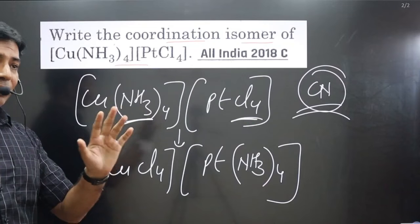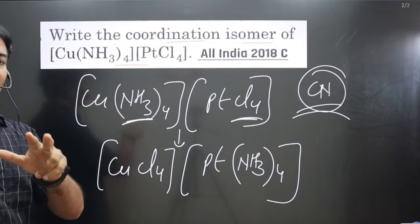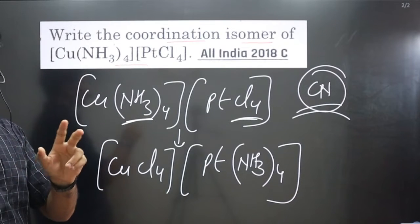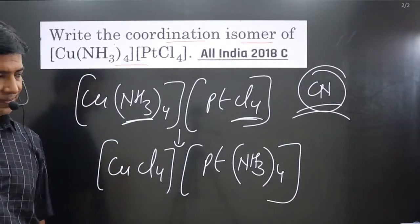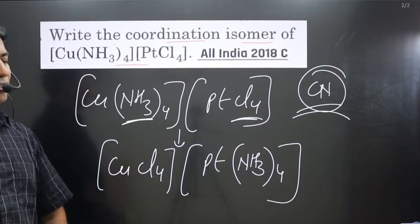It is the interchange of the ligands between the central metal atom. Two central metal atoms should be there. One and this is the second. So they are interchanging their position.